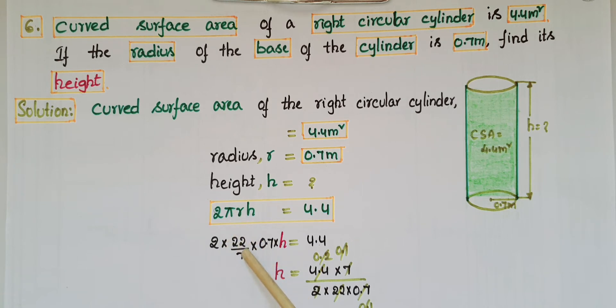So h equals 4.4 into 7 by 2 into 22 into 0.7. 7 ones are 7, point ones are 0.7. Then 22 ones are 22, point twos are 4.4. And 2 ones are 2, point ones are 0.2. Then cancel these 0.1 and 0.1, then you will get 1 meter.